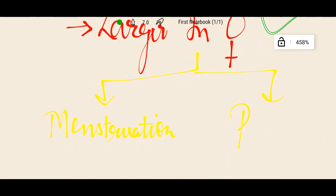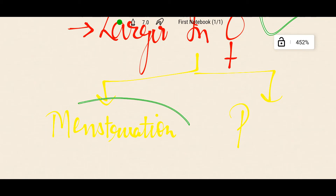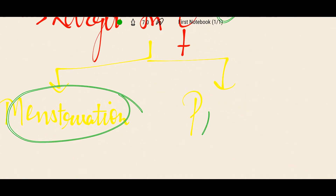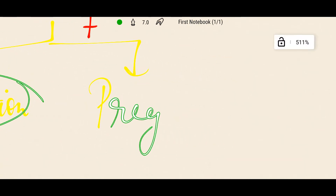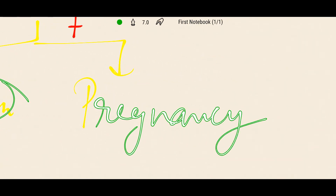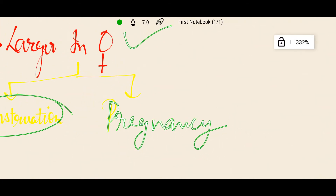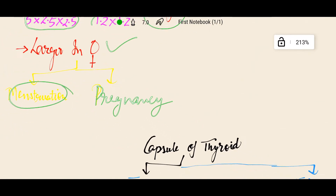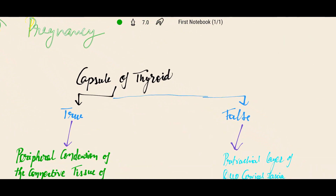The thyroid gland is larger in females than in males for two reasons: one is menstruation, and the other is pregnancy. Because of these two factors, the thyroid gland is slightly larger in females.